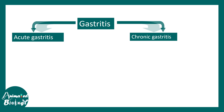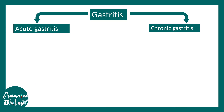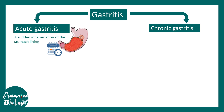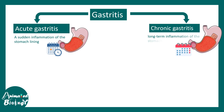There are two types of gastritis: acute and chronic. Acute gastritis can occur suddenly — it is a sudden inflammation in the stomach lining — whereas chronic gastritis is a long-term inflammation of the stomach lining.